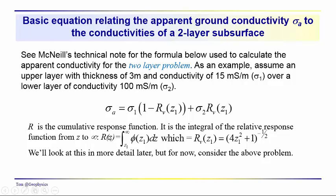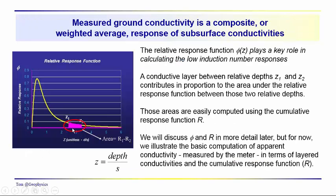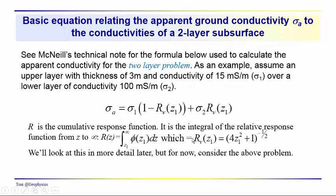R is simply calculated as the integral of the relative response function from z1 to infinity. So we have R1 would be the area from z1 all the way out to infinity. R2 in this case would be the area from this point all the way out to infinity. So the area that we get here is the difference between those two cumulative response functions.